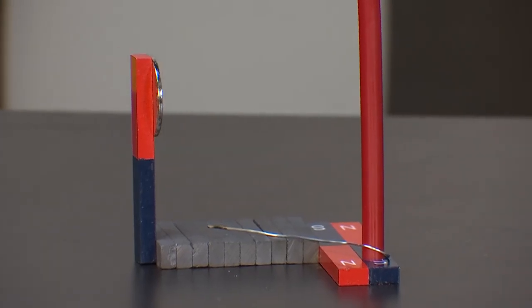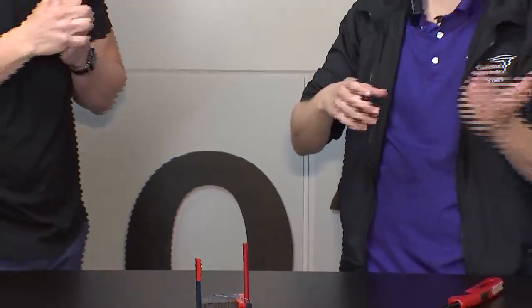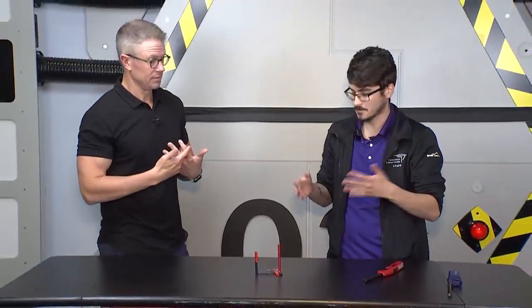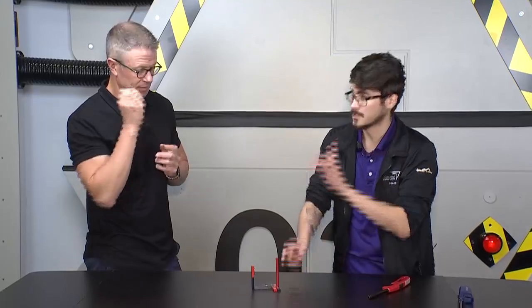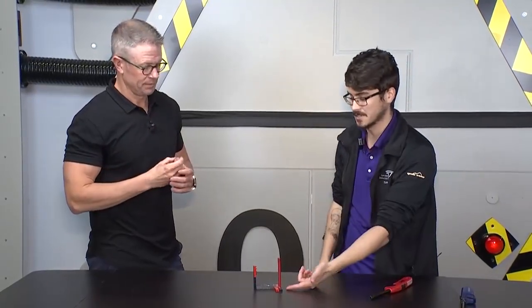So ferromagnetism: all the molecules inside, all the stuff that's moving around and spinning inside, they're all facing the same way. That's what makes them so attractive. Now when you heat that, they start changing which way they're facing. So it loses that magnetic ability, as we can see—it falls right down.